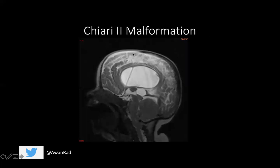Moving on to Chiari 2, which is more severe than Chiari 1 and typically presents much earlier in age. Patients can present with hydrocephalus, lower extremity spasticity, bowel and bladder dysfunction, and even symptoms related to brainstem compression like apnea or swallowing difficulties. What you're looking for is not only herniation of the cerebellum through the foramen magnum, but also part of the medulla herniating past the foramen magnum. Drawing the imaginary line between the basion and the opisthion, we can see the cerebellar tonsils and the medulla have herniated through. When you see both the cerebellum and the medulla herniate, that's a Chiari 2 malformation.